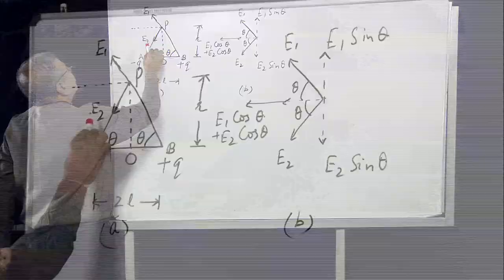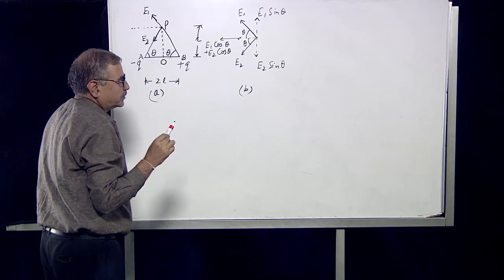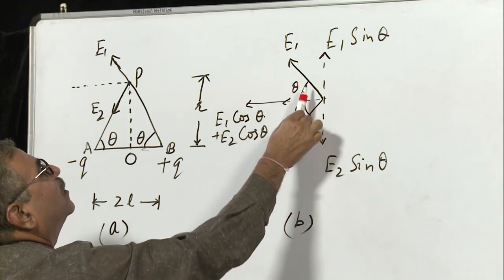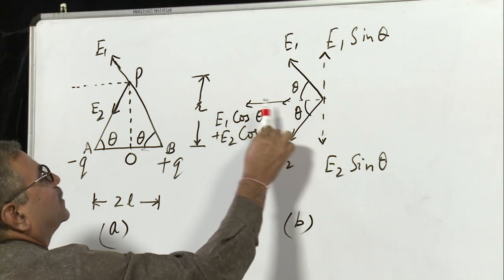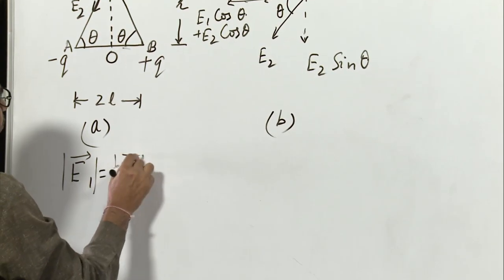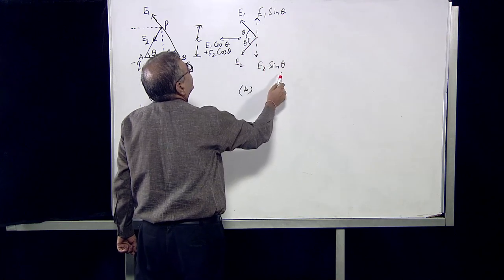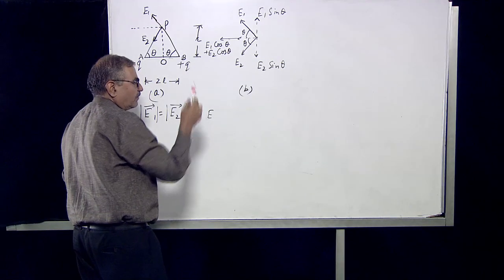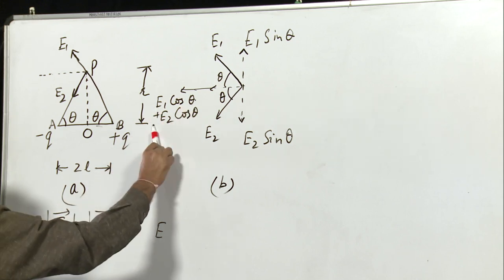E1 and E2 are equal in magnitude but their directions are different, so they are to be resolved into components. In figure B, we have resolved E1 and E2 into components. This angle will be theta and this angle will also be theta. Resolving E1 into components: it will be E1 sin theta and E1 cos theta. Similarly, E2 cos theta and E2 sin theta. Since the magnitude of E1 equals the magnitude of E2, the sin theta components are equal and opposite and cancel each other. So the net electric field will be in the horizontal direction only, equal to E1 cos theta plus E2 cos theta.